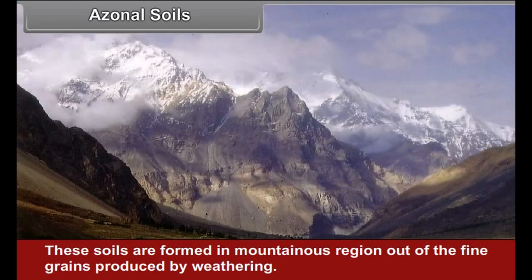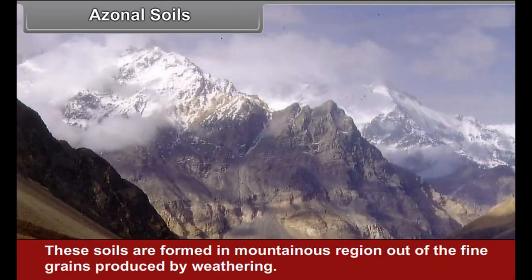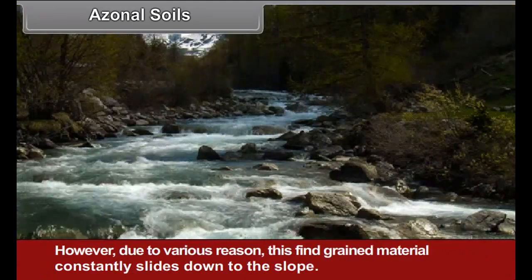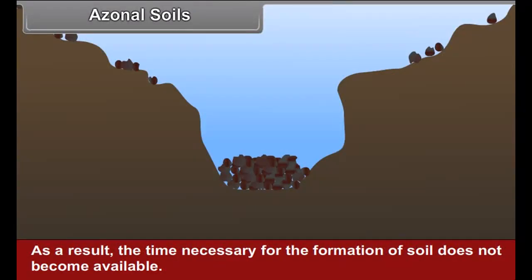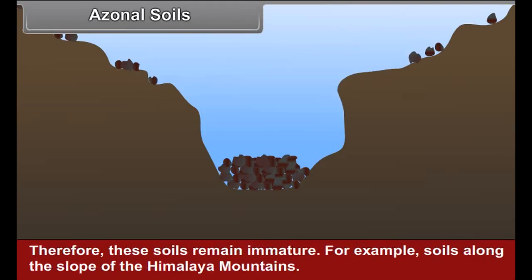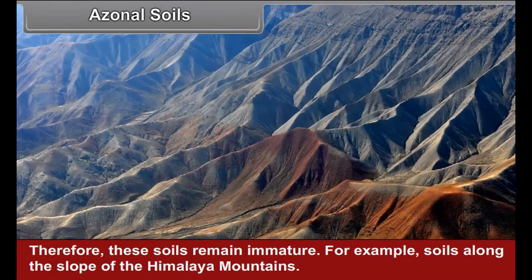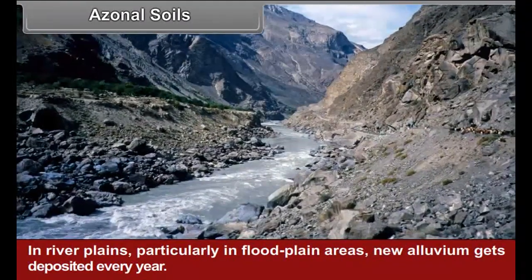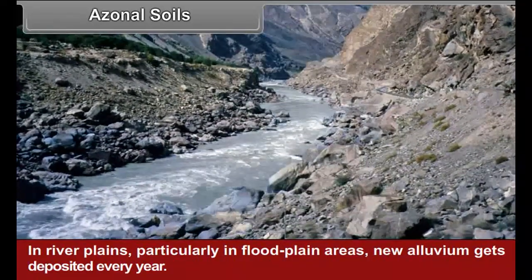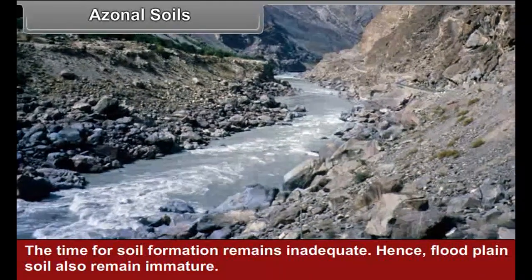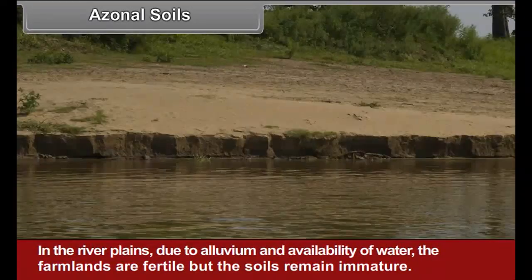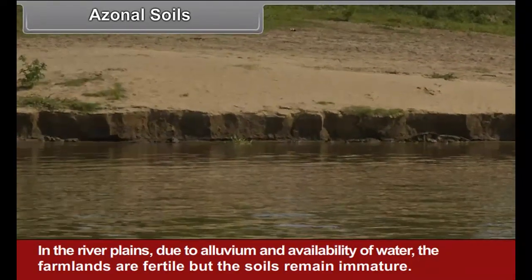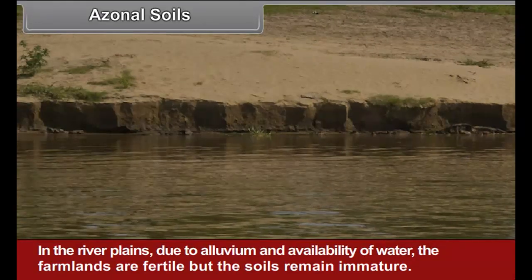Azonal soils are formed in mountainous regions out of fine grains produced by weathering. However, due to various reasons, this fine-grained material constantly slides down the slope. As a result, the time necessary for formation of soils does not become available, and these soils remain immature — for example, soils along the slopes of the Himalaya mountains. In river plains, particularly in floodplain areas, new alluvium gets deposited every year and the time for soil formation remains inadequate. Hence, floodplain soils also remain immature. In the river plains, due to alluvium and availability of water, the farmlands are fertile, but the soils remain immature.